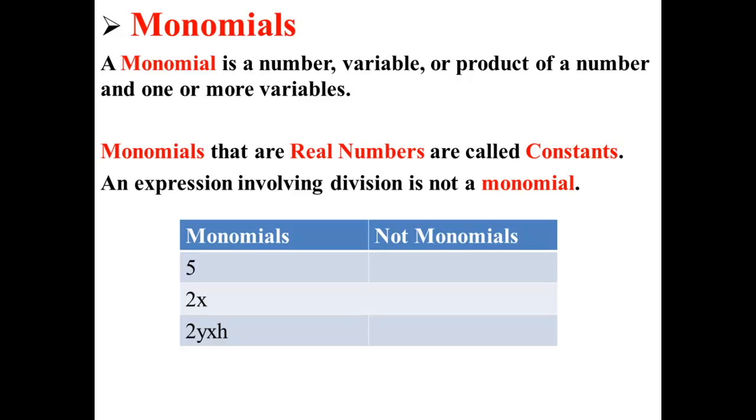Here we have three examples of things that are not monomials. We have 2 plus x, x divided by y because it has division, and 2y minus 4.